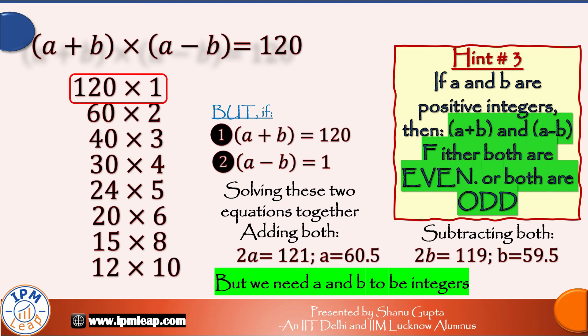That means we keep only the combinations of even and even and rule out the combinations of even and odd because they will not give us integral values of a and b. So this option, this option, this option and this option are ruled out.